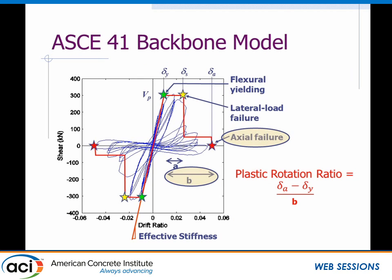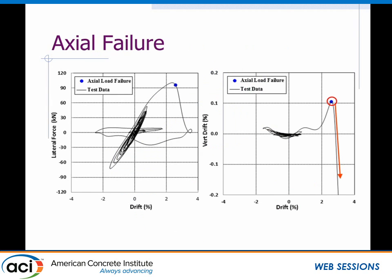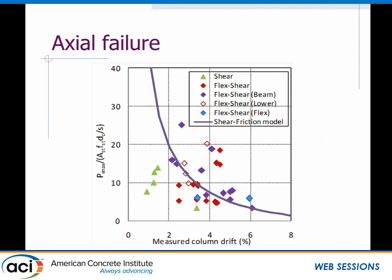Now let's look at axial failure. We're going to look at a plastic rotation ratio focused on the B value. Axial failure is difficult to define in a dynamic test because the axial load is changing constantly — there's interaction and indeterminate systems. We looked carefully at all the data and videos, and determined that axial failure could be defined as the point at which the column peaked on its vertical extension just before dropping, just before large shortening occurred.